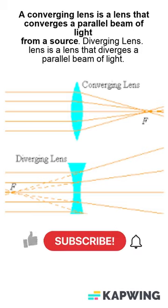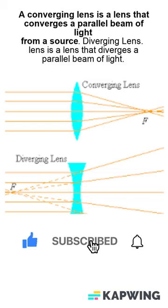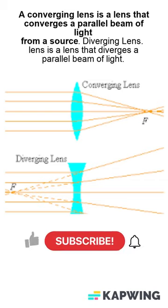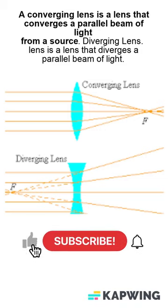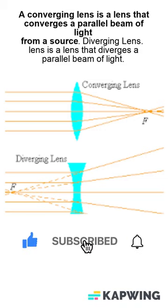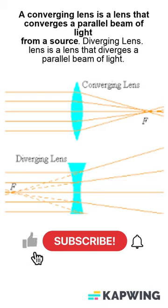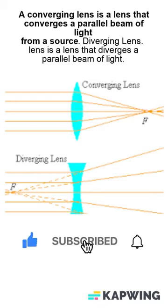A converging lens is a lens that converges a beam of light. As we can see in the example, a diverging lens is a lens that diverges rays in all directions, while the converging lens converges them to a point — it brings them together.